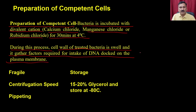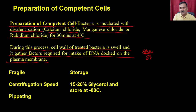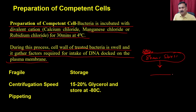During this preparation, the cells take up the divalent cations and become a little fragile. You must handle these cells carefully because they are also susceptible to shear stress — when two layers rub against each other, causing friction. So competent cells are very fragile. You cannot centrifuge them at very high speed as it will lyse the cells, and you cannot pipette aggressively with thin-bore tips either, as it will destroy the cells.